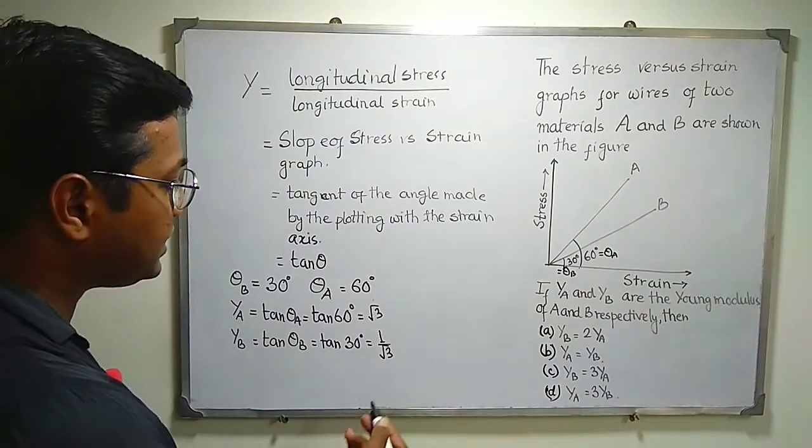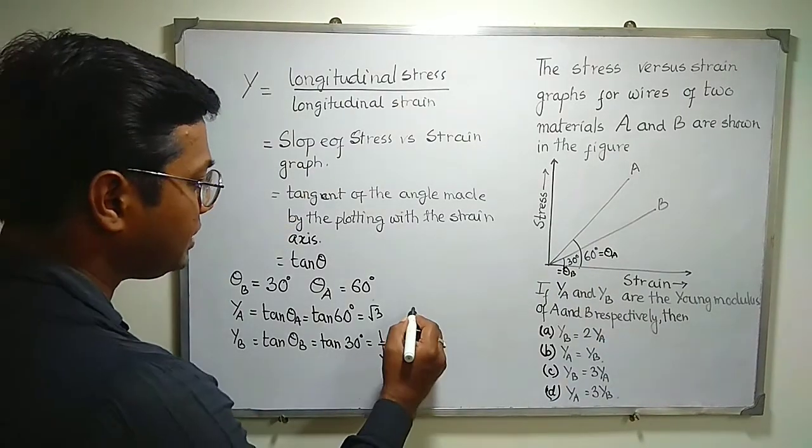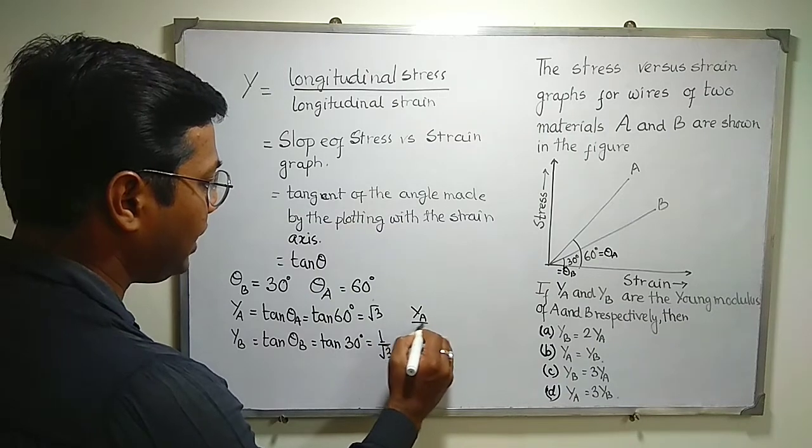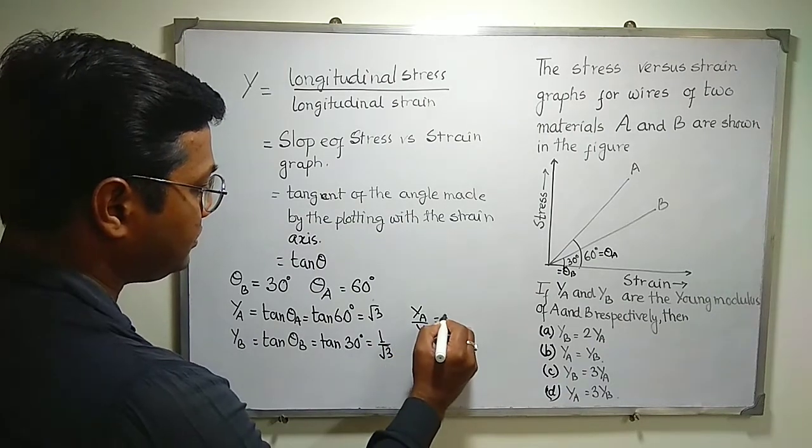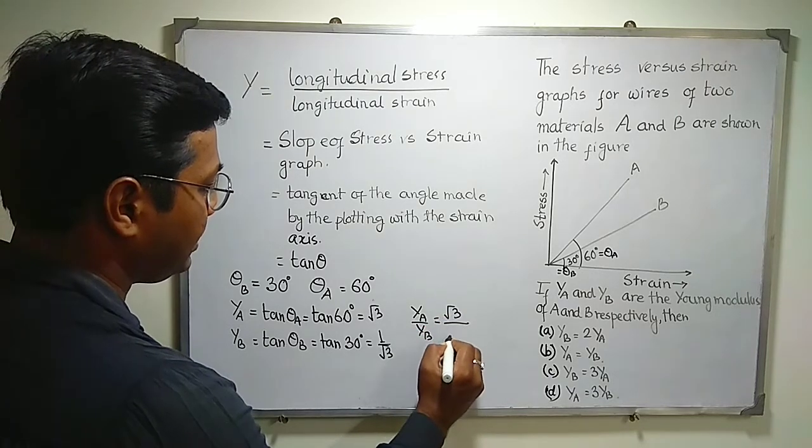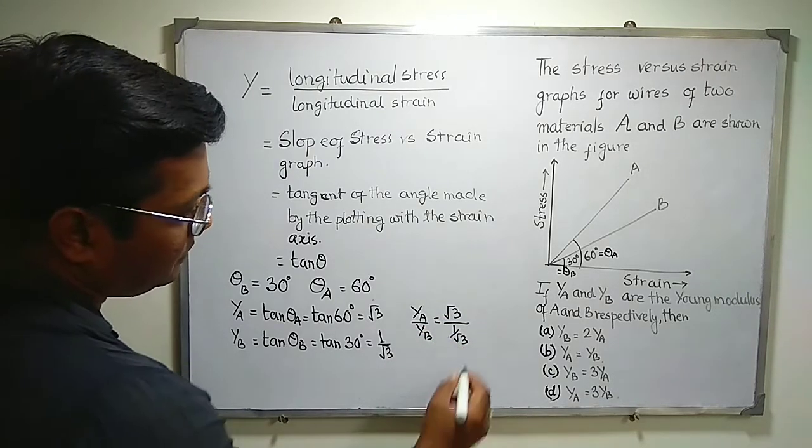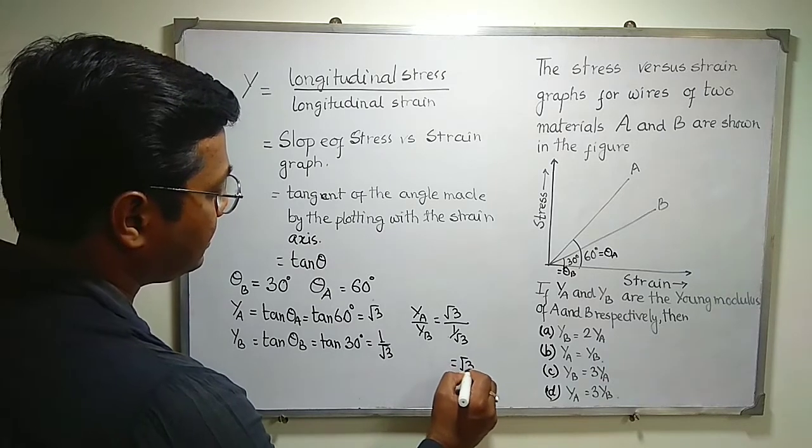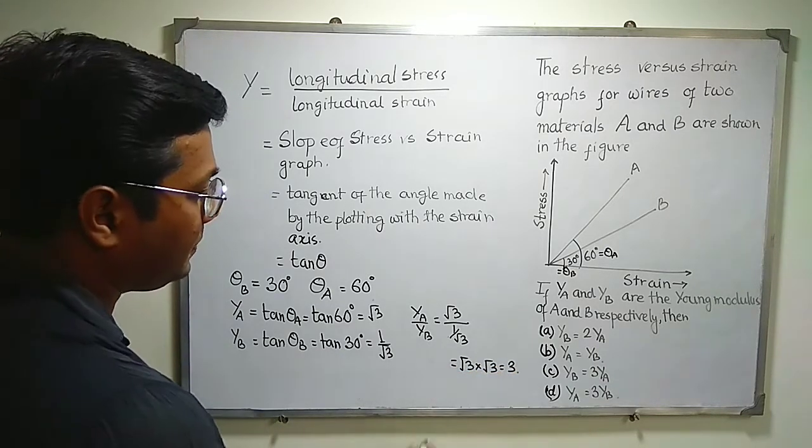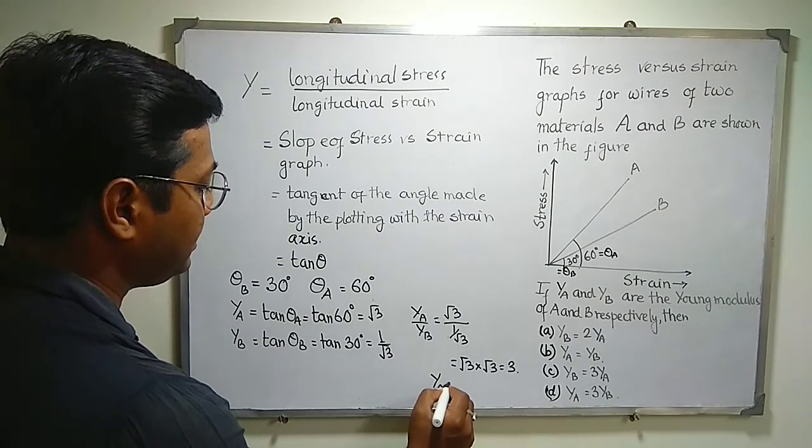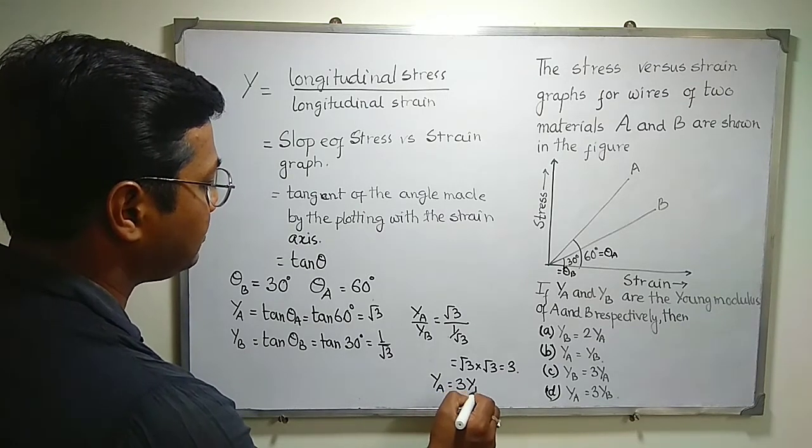So if I just take the ratio of YA and YB, let us check it out. YA divided by YB will be root 3 divided by 1 by root 3. So this will become root 3 multiplied by root 3 equal to 3. So YA equal to 3 into YB.